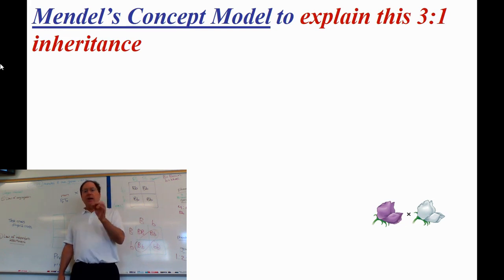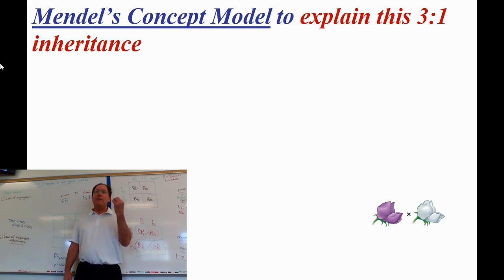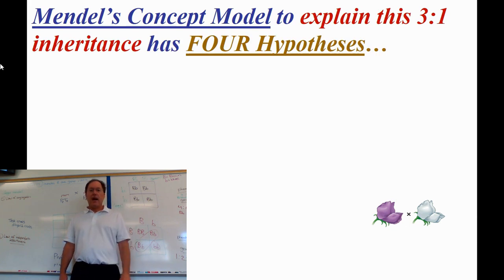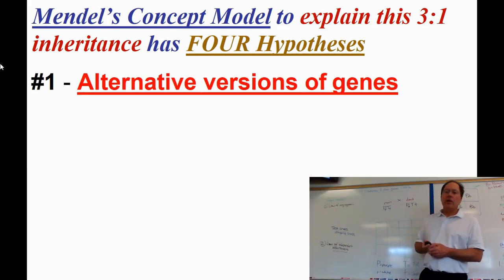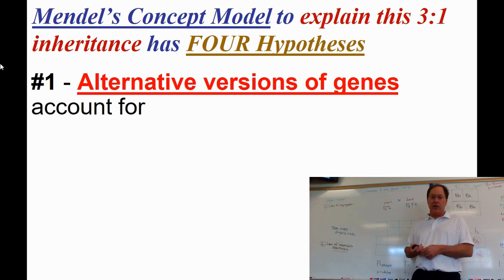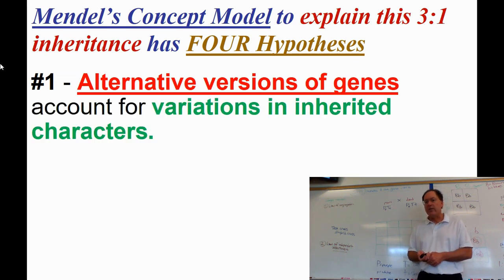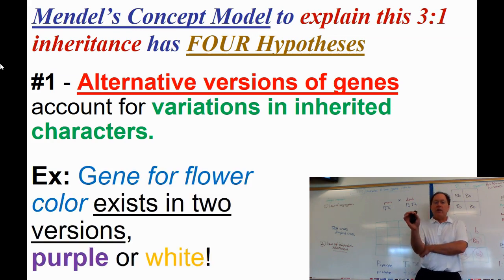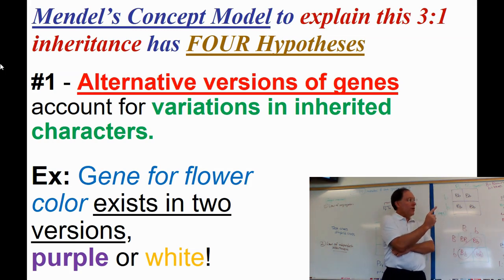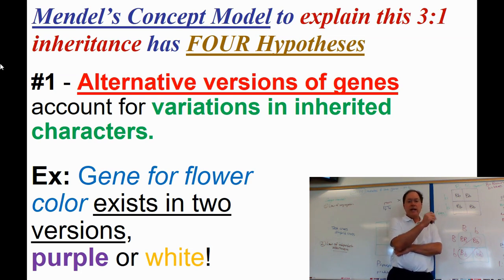His genius was that he came up with hypotheses to support his observation. Here are his four hypotheses — you need to know these. The first: there are alternative versions of genes — or factors — that account for variations in inherited characters. For example, the gene for flower color exists in two versions: purple or white, or big B vs. little b, and that's what gives the characteristic to the next generation.